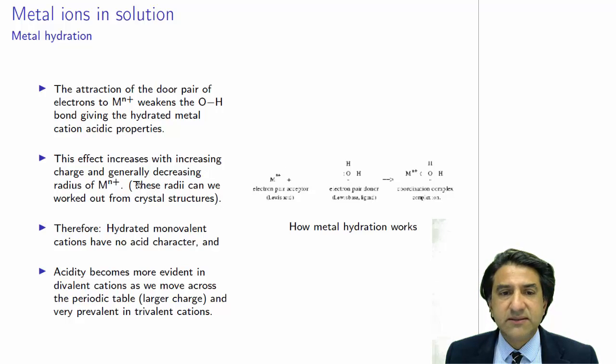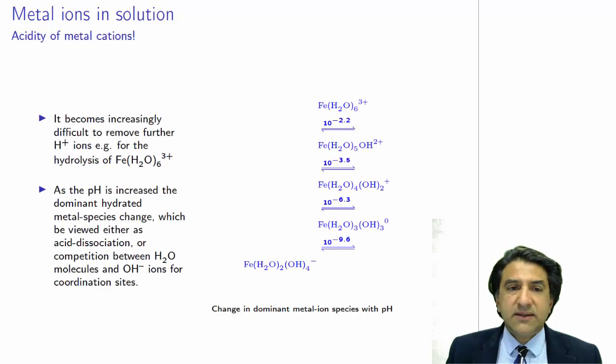OK, so this effect, the acidity of an aquated metal ion, it can be measured with a pH meter, obviously. And the bigger the charge, the more acidic the solution. So acidity increases with charge, monovalent, divalent, trivalent.